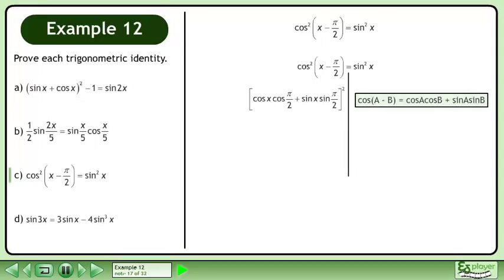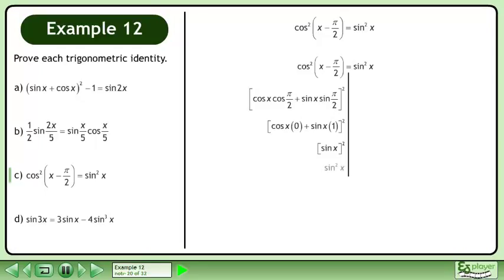Don't forget the expansion is still being squared. Find the exact values of the trigonometric ratios. This becomes sin²x. This can also be written as sin²x. The left side equals the right side, completing the proof.